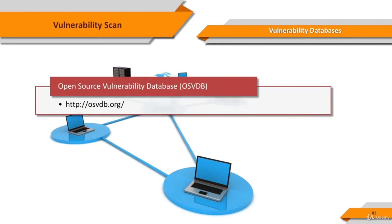The Open Source Vulnerability Database (OSVDB) was an independent and open-source database. The goal of the project was to provide accurate, detailed, current, and unbiased technical information on security vulnerabilities. It promoted greater collaboration between companies and individuals and was started in August 2002 at the Black Hat and DEF CON conferences. On April 5th, 2016, the database was shut down, although the blog continued.